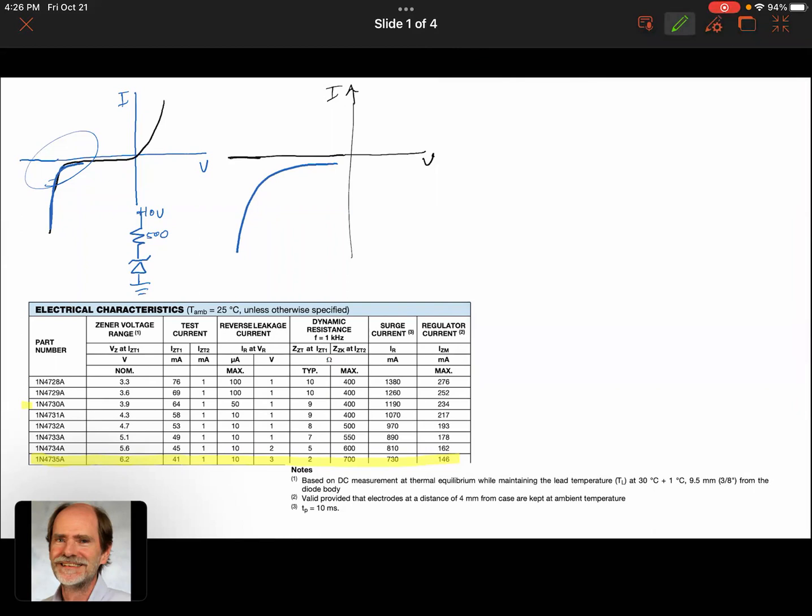We've got Vz at Izt1, and we've got Izt1 and Izt2, and we've got a reverse leakage current at this Vr, and then we've got a dynamic resistance at these two different settings. And then we've got a surge current or a regulating current that we can handle. It's like, what does all this mean?